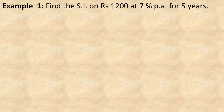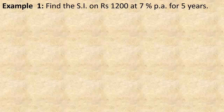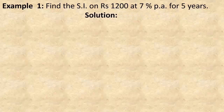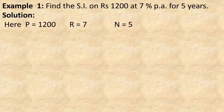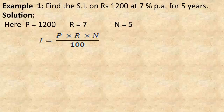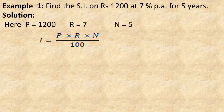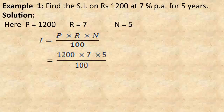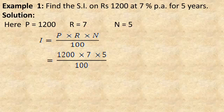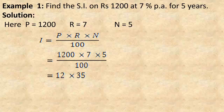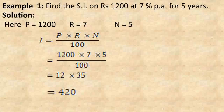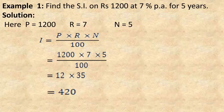Example 1: Find the simple interest on Rs. 1200 at 7% per annum for 5 years. Solution: Here P = 1200, R = 7%, N = 5 years. Using the formula I = P × R × N / 100, substituting the values: I = 1200 × 7 × 5 / 100 = 12 × 35 = 420. Therefore, the simple interest on Rs. 1200 is Rs. 420.